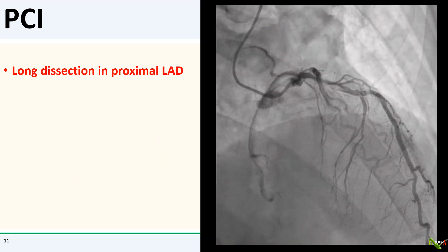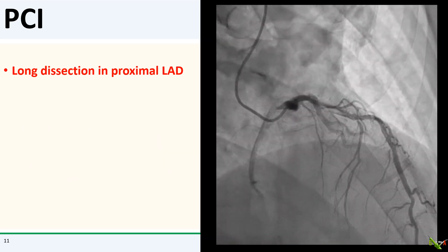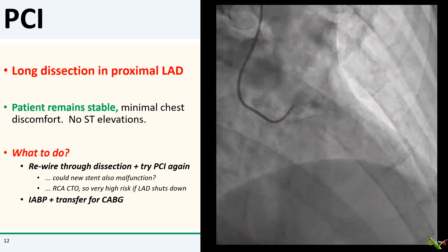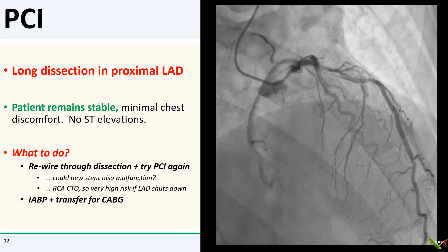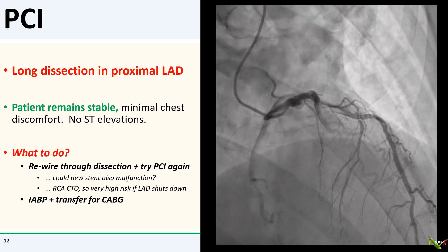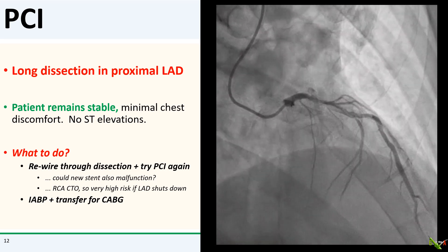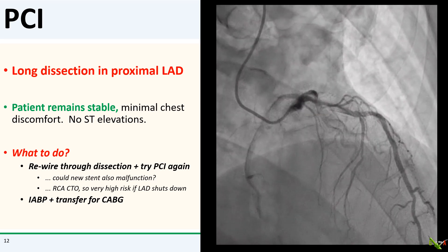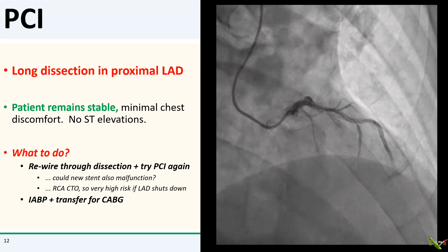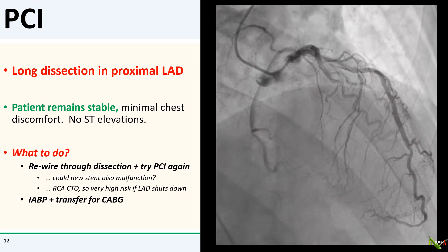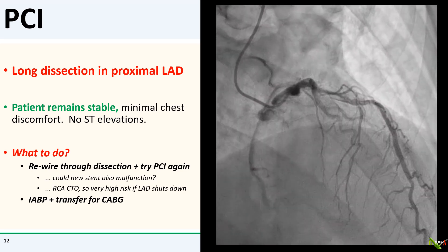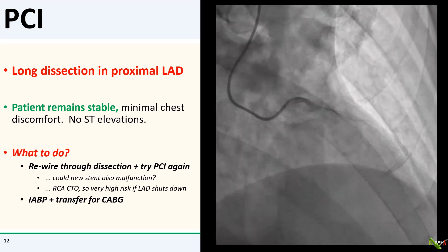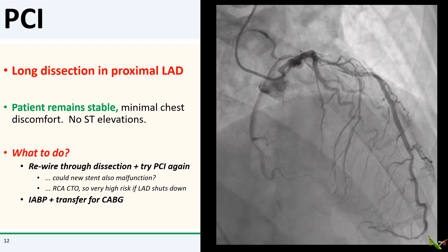This is what the LAD looks like now. There is a long dissection in the proximal LAD, probably going all the way back to the ostium. The patient remained remarkably stable — he still had minimal chest pain and no ST elevations. Option one would be to rewire through the dissection and try PCI again. But this patient has an RCA CTO, so wiring through the dissection is extremely high risk. If the LAD shuts down, we're toast. I was also worried about a second stent malfunctioning, as I wasn't sure what caused the first balloon to rupture.